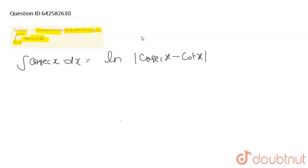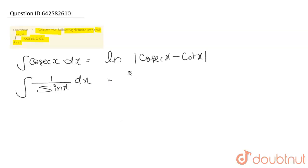अब next step में, अगर इसे proof भी करना चाहूँ तो हम proof भी कर सकते हैं। Cosec x को मैं लिख सकता हूँ 1 upon sin x और dx, और फिर ऊपर नीचे sin x से multiply किया, तो आता है sin x upon sin²x dx।